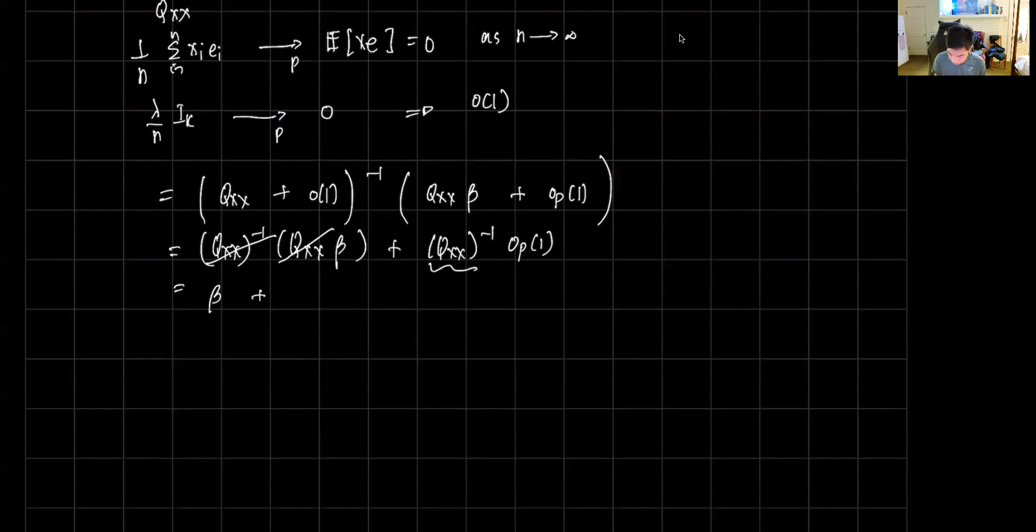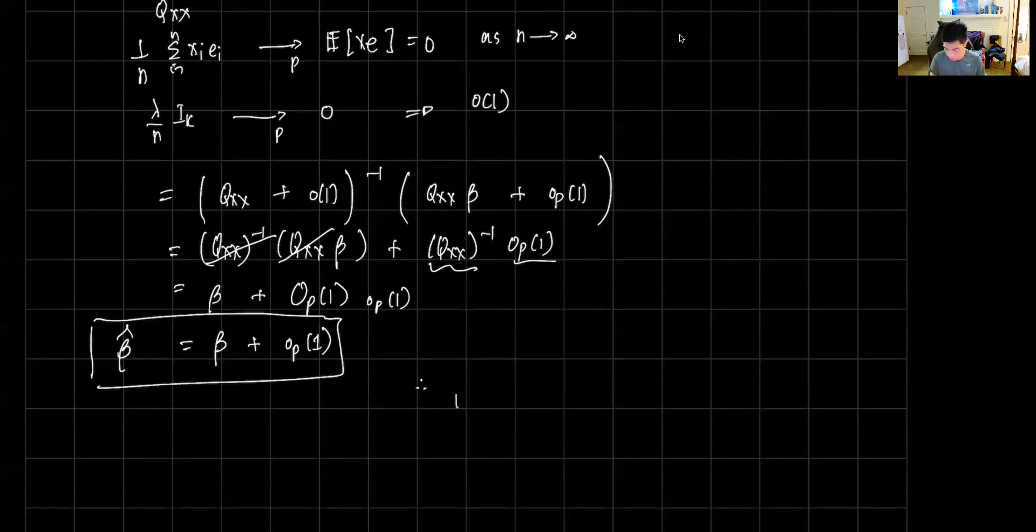Then this term here is big O_p of 1, this one is small o_p of 1, and we're going to be left with beta plus big O_p of 1 times small o_p of 1. The small o_p of 1 will triumph, so we have small o_p of 1. So this is beta hat, and clearly this is our conjecture for a consistent estimator. Beta hat, which is the ridge regression estimator, is a consistent estimator of beta. And that ends our proof. Thank you for your attention, and I'll see you in the next video.